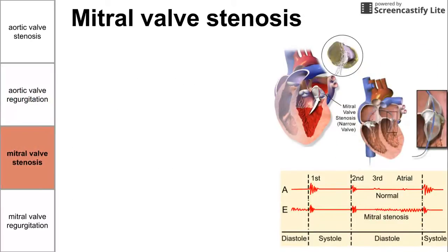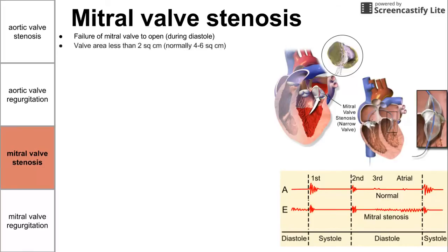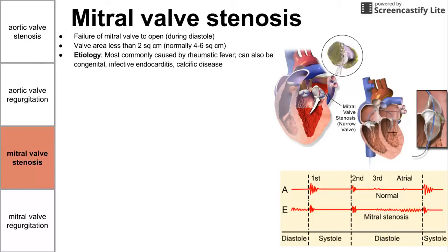Next is mitral valve stenosis. Mitral valve stenosis is narrowing of the mitral valve, or failure of the mitral valve to open. This happens during diastole, when the atria contract, and you cannot get blood from the left atria to the left ventricle. The valve area by definition is less than two square centimeters — normally four to six. This is usually caused by rheumatic fever, but can also be congenital, caused by infective endocarditis, or calcific disease.